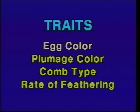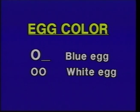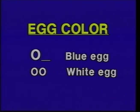The first example for egg color deals with blue and white eggs, and the inheritance pattern is rather simple. Blue is dominant to white. An animal that is either homozygous or heterozygous for the blue allele will produce blue eggs. White is recessive to blue, and a hen has to be homozygous for the little O allele to produce white eggs.